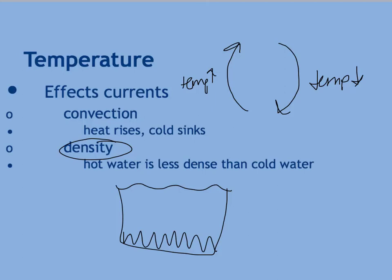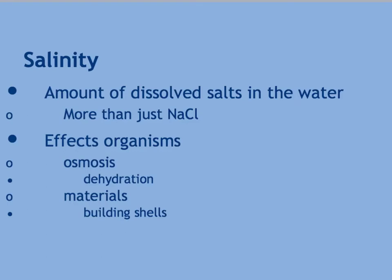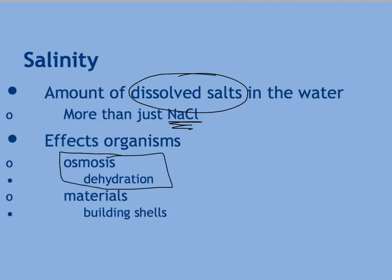This also means that nutrients concentrate down at the bottom. That very dense bottom water has a much higher salinity, which, as you learned in the last unit, is the amount of dissolved salts in the water — and that's more than just table salt, there are lots of different salts. This can affect organisms, as you learn in biology — it affects their ability to control osmosis, which can cause dehydration, and it can affect their ability to build things like shells. The more calcium carbonate and carbonate salts you have in the water, the more available it is for organisms to build their shells. The more acidic the water, the less of that salt is actually available to them.